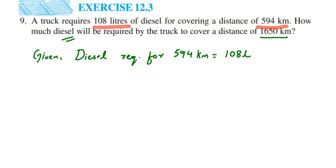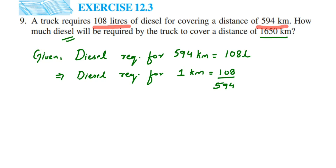Now, diesel required for 1 kilometre is equal to 108 divided by 594 litres. We can cancel both numbers using the 2 table since both are even. Dividing 108 by 2 gives 54. For 594 divided by 2: 5 doesn't divide by 2, so 2 twos are 4, remainder 1; bring down 9 to get 19; 2 nines are 18, remainder 1; bring down 4 to get 14; 2 sevens are 14. So we get 54 over 297.